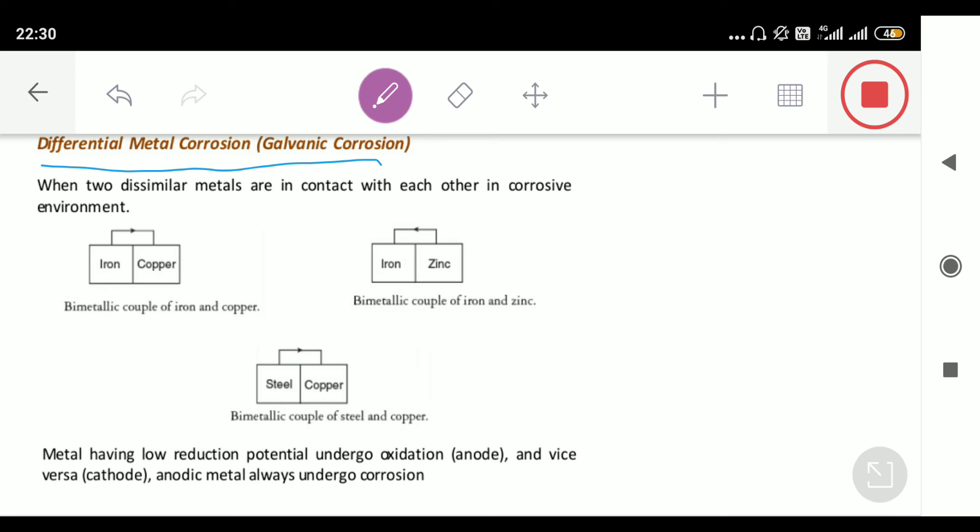Similarly, we have another differential metal corrosion where we can see steel and copper. The key thing to learn here is the metal with less E naught value is going to act as anode, and that's where the corrosion will take place.